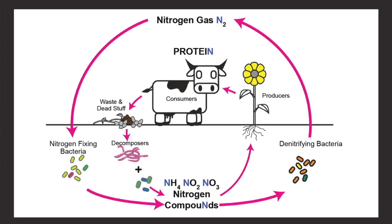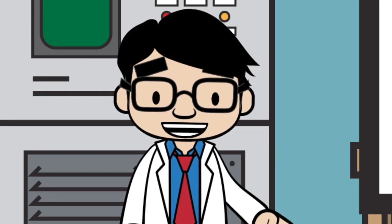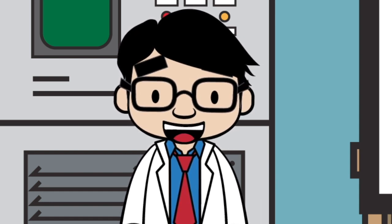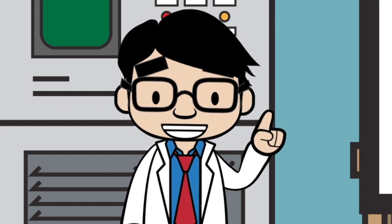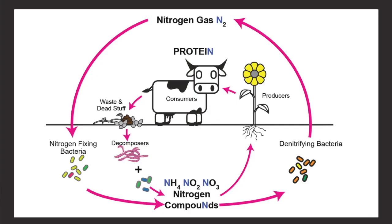This is the entire nitrogen cycle: nitrogen gas gets turned into nitrogen compounds, which get turned into proteins by plants, which get turned back into nitrogen compounds by the decomposers, and those nitrogen compounds get turned back into nitrogen gas by the denitrifying bacteria. But then that gas gets turned into nitrogen compounds by the nitrogen-fixing bacteria, and the process starts over and over again. And that's why it's called the nitrogen cycle.